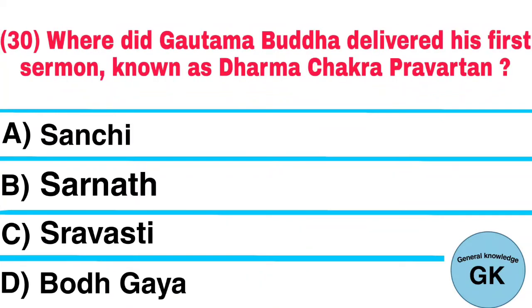Question number 30. Where did Gautam Buddha deliver his first sermon known as Dharma Chakra Pravartana? A. Sanchi, B. Sarnath, C. Sravasti, D. Bodh Gaya. Answer: Sarnath.